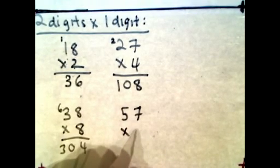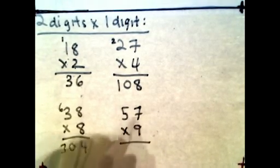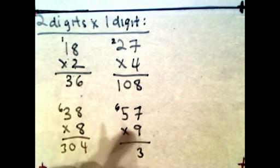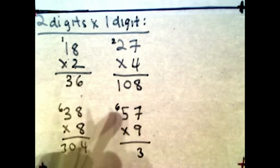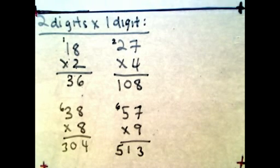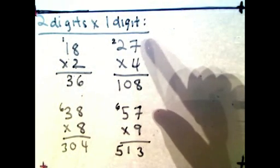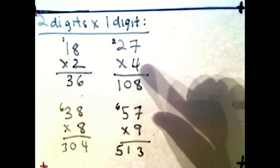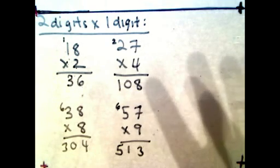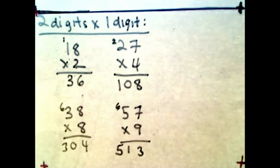Let's try another one. 57 times 9. 7 times 9 is 63. Carry the 6 over to the other side, the 10th column. 5 times 9 is 45 plus 6 is 51, giving us 513. I hope that's easy for you guys. Again, if you're having a problem with multiplying, make sure you memorize the times table. You're either using cue cards or using your finger memorizing the sequence of multiplication table.